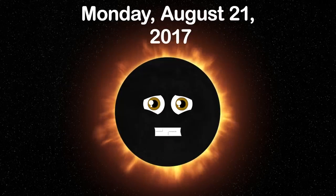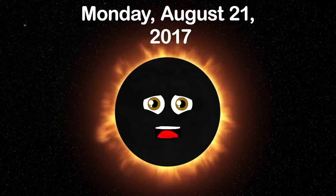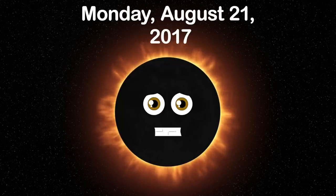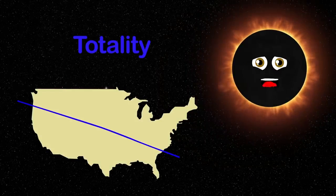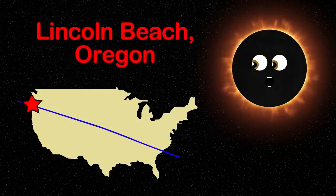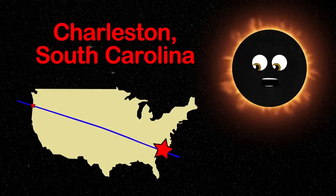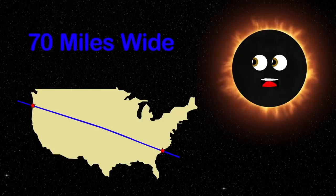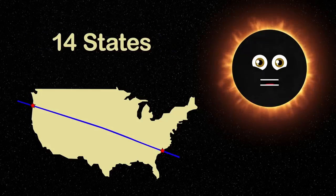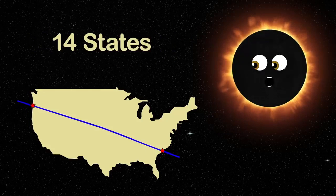On Monday, August 21st, 2017, there's a total solar eclipse North America will see. But the totality you want to see can only be observed from Lincoln Beach, Oregon to Charleston, South Carolina. The path of totality is 70 miles wide, seen in 14 states in the continental U.S.